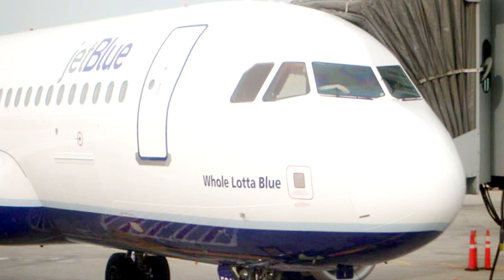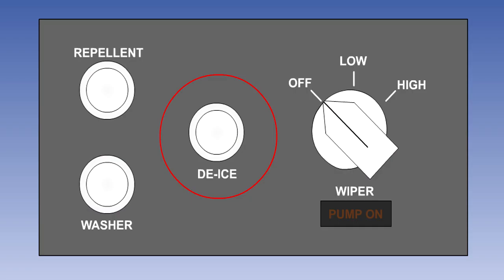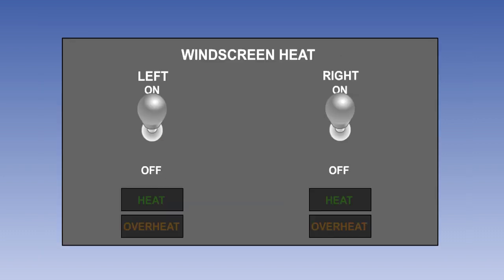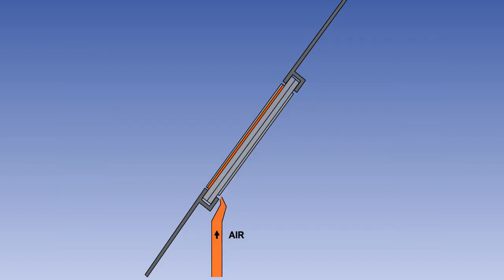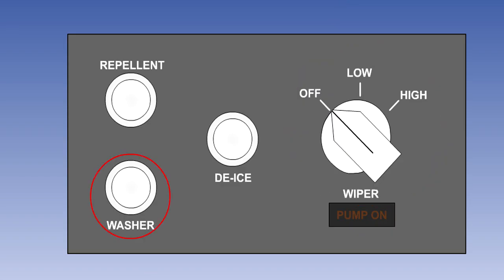In this lesson, we will look at the various ice and rain protection systems available for aircraft windscreens. Windscreens are protected from icing by fluid sprays or by electrical heating. Cabin air may also be blown across them for demisting. Wipers and washers are also provided, and on some aircraft these may be assisted by the use of rain repellent systems. We will now look at these systems in more detail.